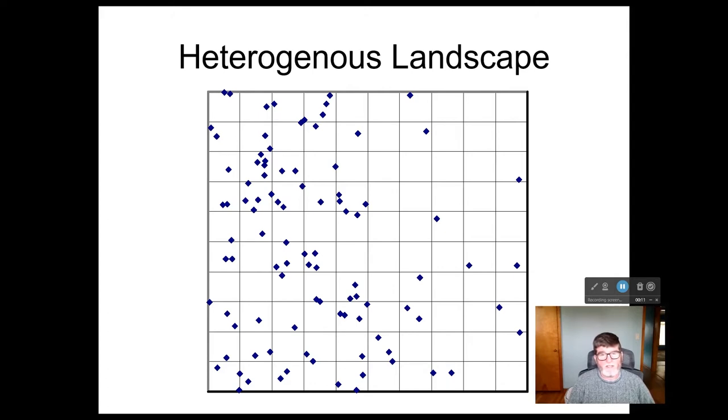Stratification is a strategy that we use whenever there's heterogeneity in the variable that we're interested in. So for example, on this landscape, instead of having the same mean number of points per quadrat across the entire landscape, the left-hand part of the landscape has a higher number of points than the right-hand part of the landscape.